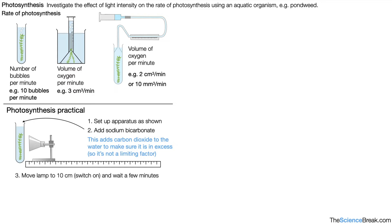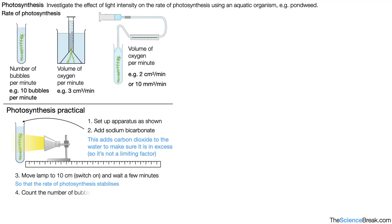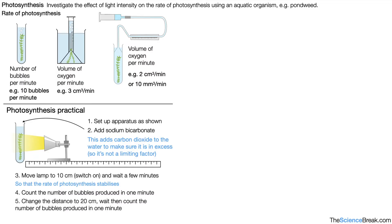We move the lamp to 10 centimeters, switch on, and wait for a few minutes so that the rate of photosynthesis stabilizes — it takes a minute or two for that. We then count the number of bubbles produced in one minute. We change the distance to 20 centimeters, wait, then count again. We repeat this for five different distances.